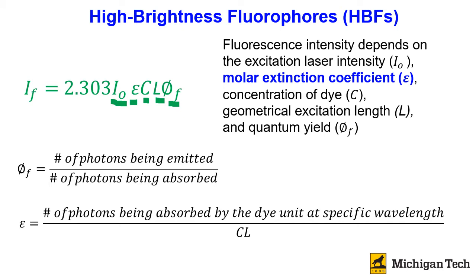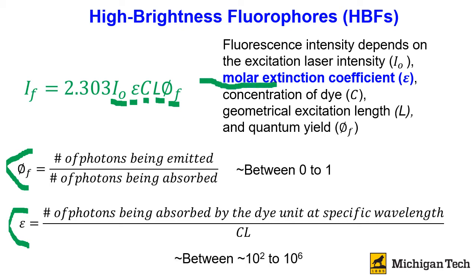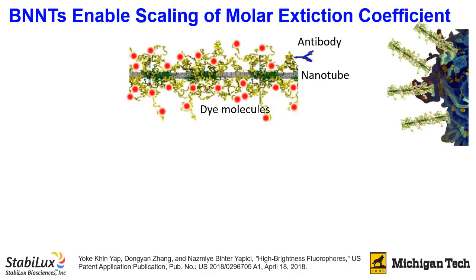Quantum yield itself always ranges between 0 and 1, whereas epsilon, the molar extinction coefficient, can be tuned between 10² to 10⁶. This means if you would like to produce a high brightness fluorophore with very high intensity, it is much more cost-effective to work on how to increase the molar extinction coefficient. Let me show you how we use boron nitride nanotubes to enhance the molar extinction coefficient of our fluorophore.